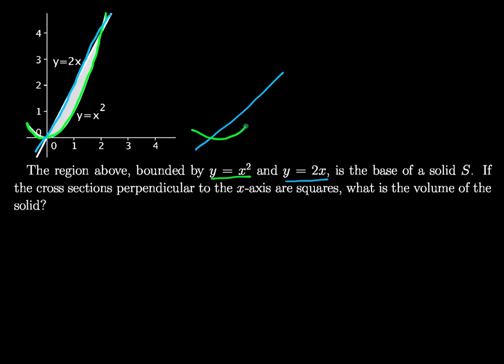Now we can see that the cross-sections perpendicular to the x-axis here are all squares. They start small over here, they get bigger as we get towards this middle area where the curves are farthest apart, and they get really small again out here on the edge.